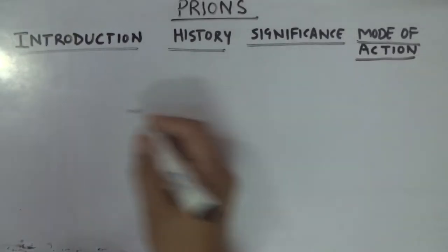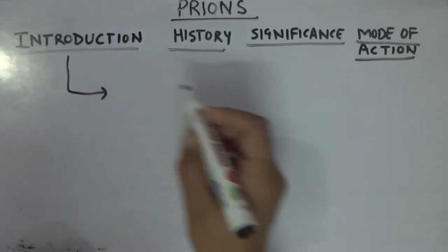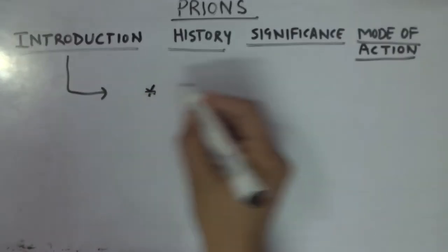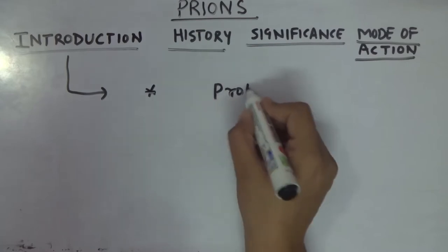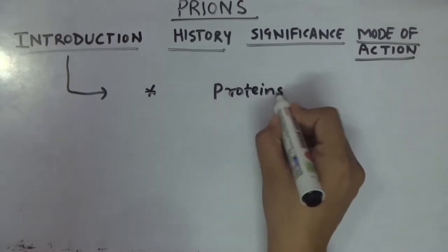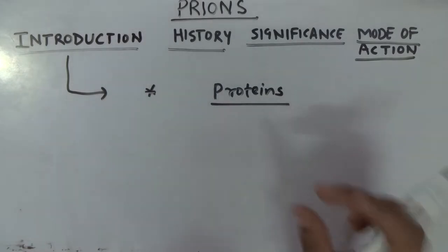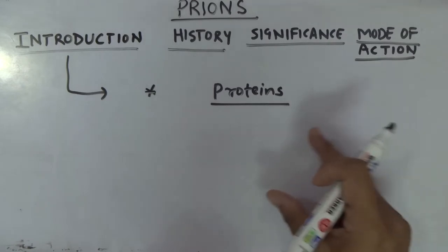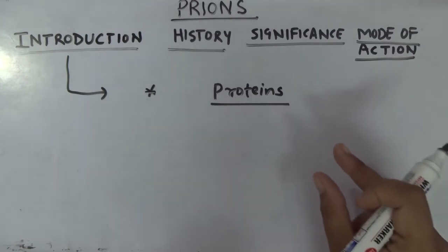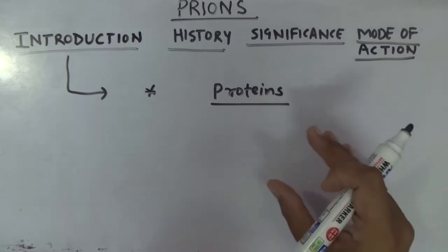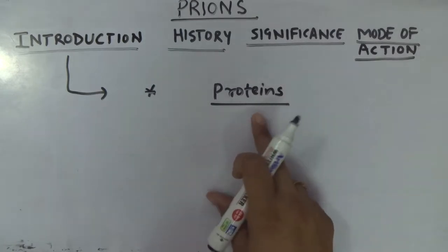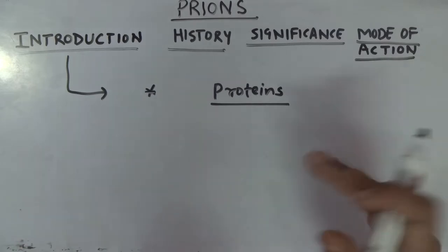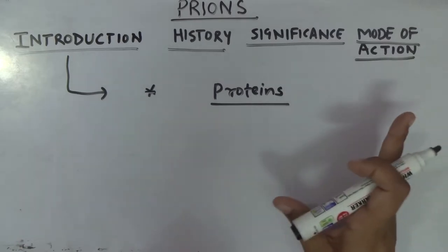Let's start with the introduction. When we talk about prions, always remember prions are proteins. But the question comes to mind: if prions are proteins, why are we not just using the term 'proteins' for this group? Because the proteins of prions are somewhat different from normal proteins — they don't behave like normal proteins and their functions don't resemble normal proteins.